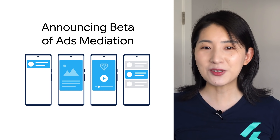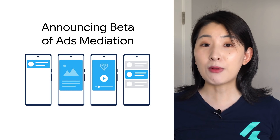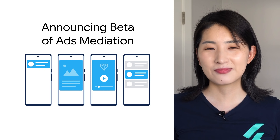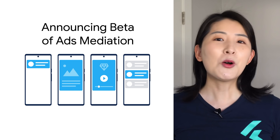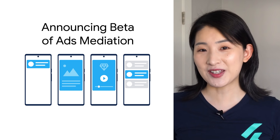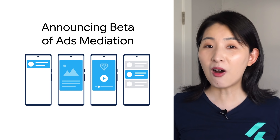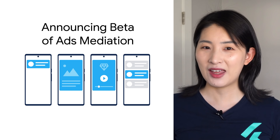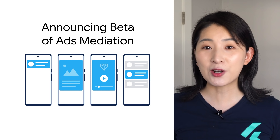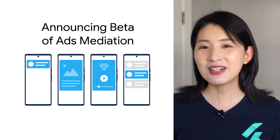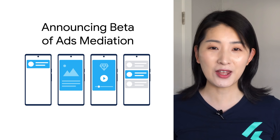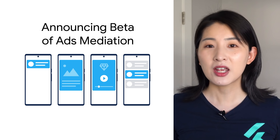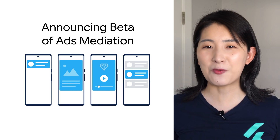Mediation can help maximize your revenue by ranking all the ad sources based on optimized performance. I'm only highlighting a few major features today, but we're supporting almost all Google Mobile Ads SDK features in this plugin — the same ads features available if you build a native iOS and Android app. You can use the same tooling to manage your campaigns, track your ad performance, etc.